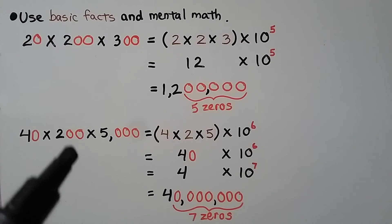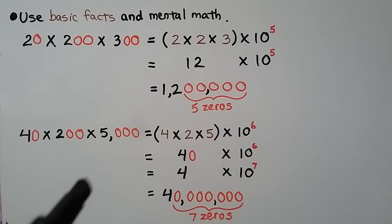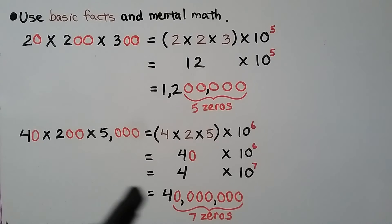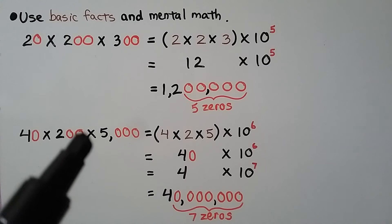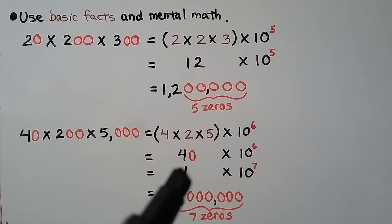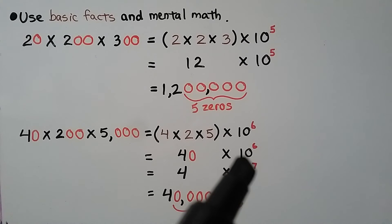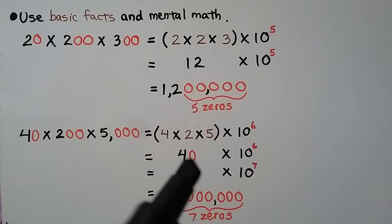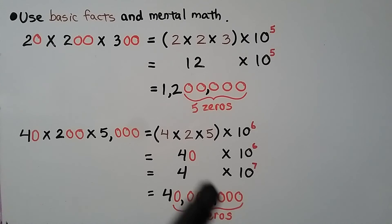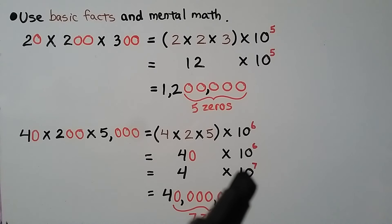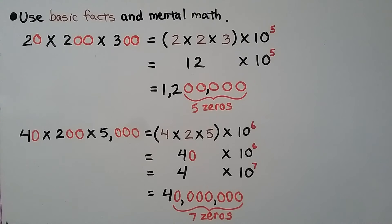For 40 times 200 times 5,000: basic facts are 4 times 2 times 5. 4 times 2 is 8, and 8 times 5 is 40. There are six zeros, so we can say 40 times 10 to the sixth power. We can also take the zero from 40 and write it as 4 times 10 to the seventh power, increasing the exponent by one. That's 4 with seven zeros: 40,000,000.